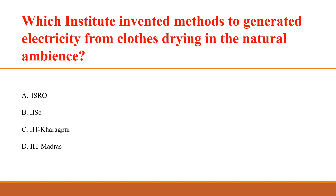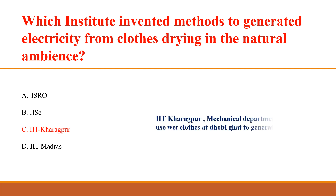Which institute invented methods to generate electricity from cloth drying in the natural ambience? Answer C: IIT Kharagpur. IIT Kharagpur's Mechanical Department researchers use wet cloth at Dobighat to generate electricity.